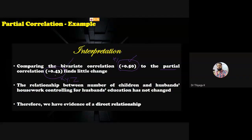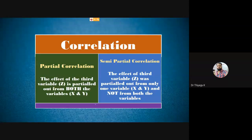Previously the Pearson product-moment correlation was 0.50, but after doing partial correlation controlling for Z, the score is 0.43. This 0.43 is the exact relationship between X and Y after controlling the confounding variable. The previous 0.50 included Z's influence; now we have the true value. In the exam, computation may not be asked — only theoretical questions. We use partial correlation when we have a third confounding variable and want to control its effect on the independent and dependent variable.